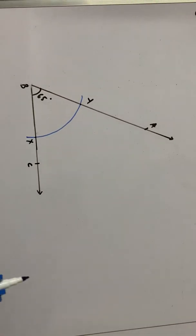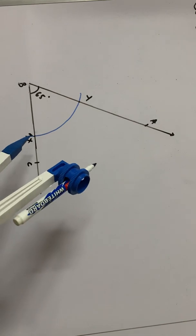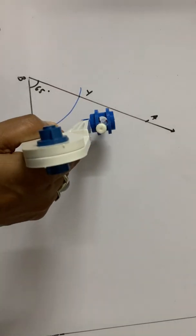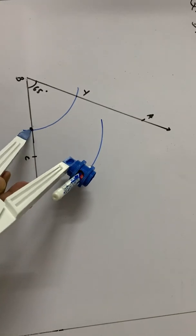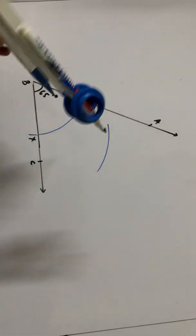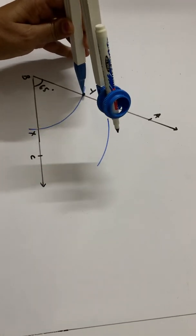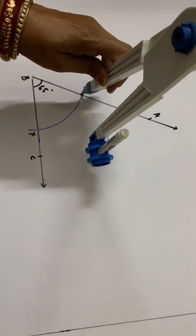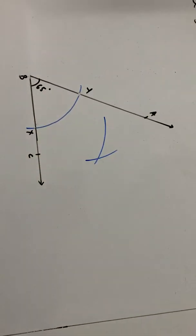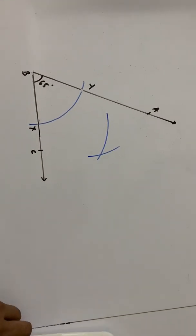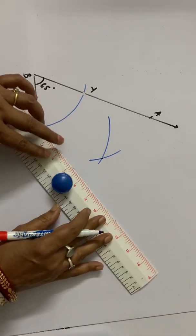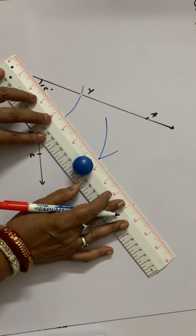Now, keeping the compass at point X, we will draw an arc. Without changing the distance of the compass, we will keep it at point Y and cut the previously drawn arc. We will mark this point and draw a ray.